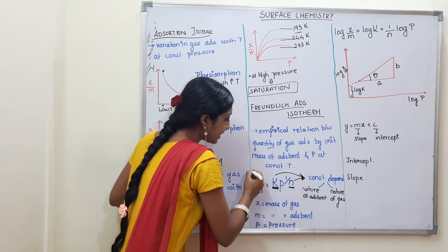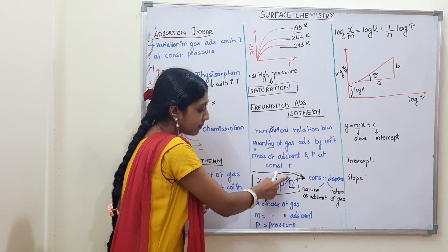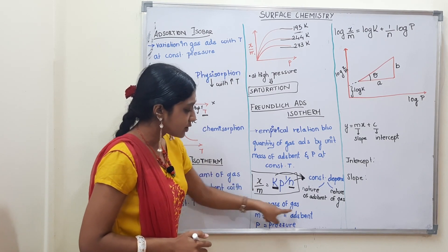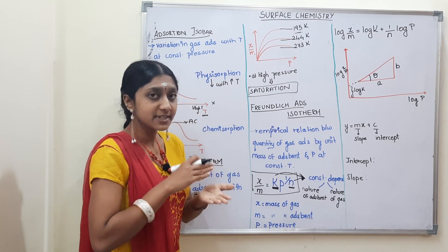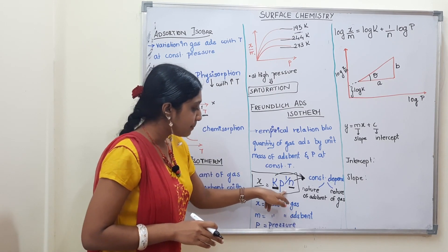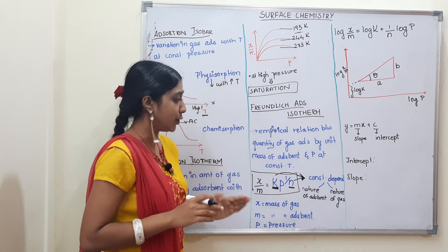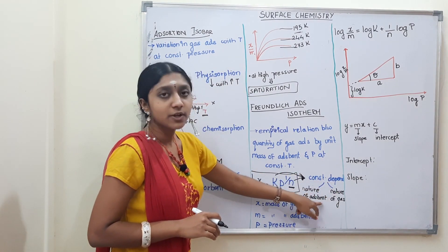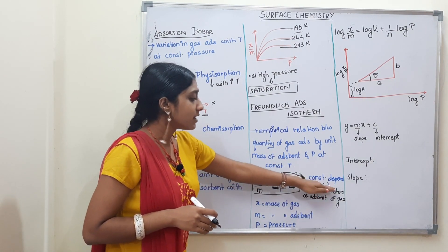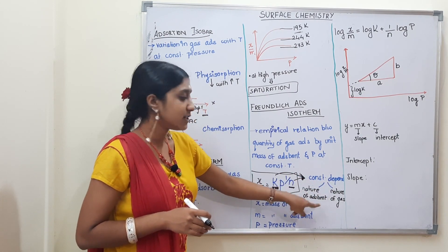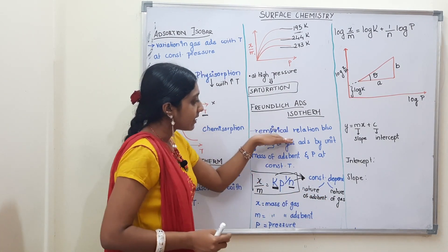The important Freundlich formula is: x/m = k·P^(1/n). Here, x is the mass of the gas (adsorbate), m is the mass of the adsorbent (the solid surface), and P is the pressure. k and n are constants. The value of constants k and n depend on the nature of the adsorbent and the nature of the adsorbate (the gas).